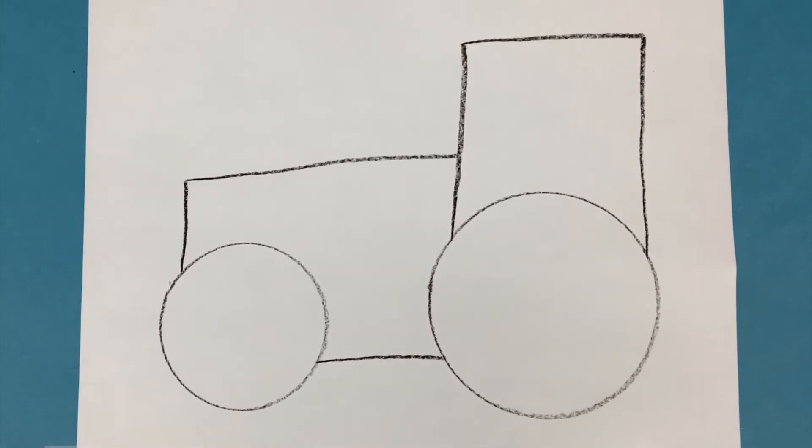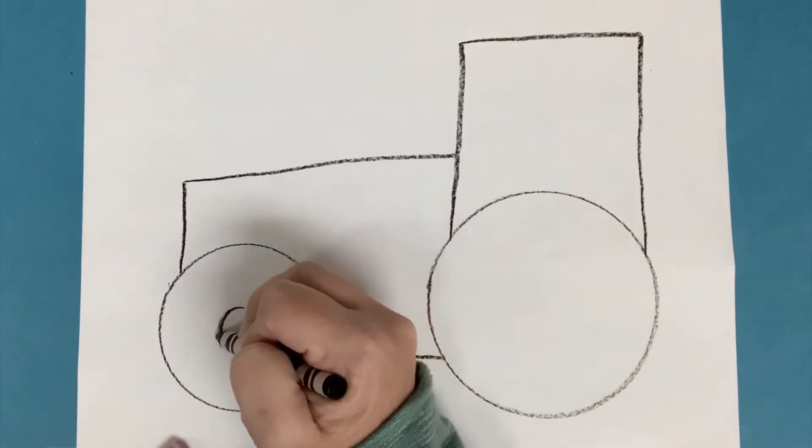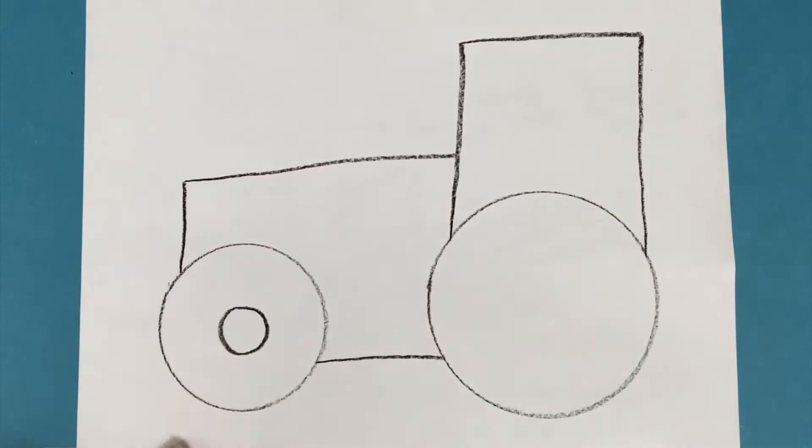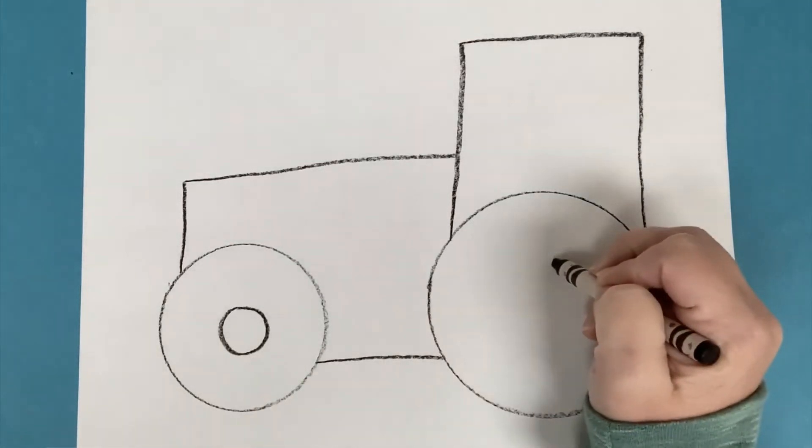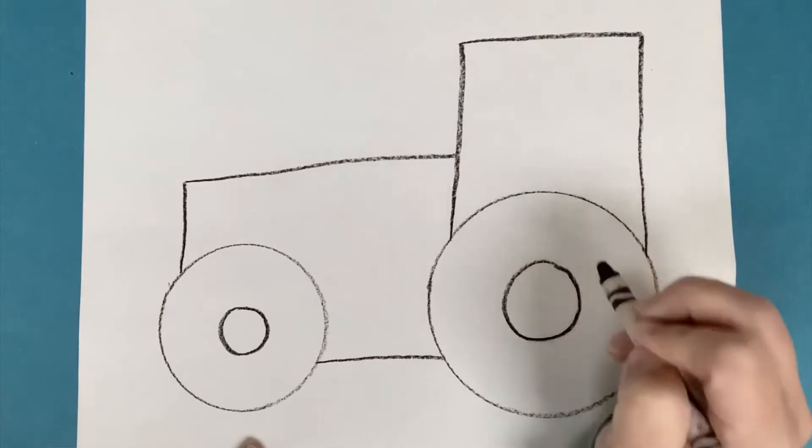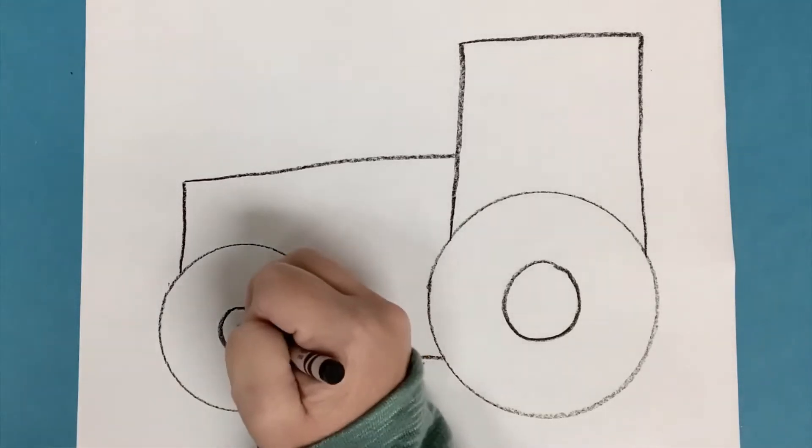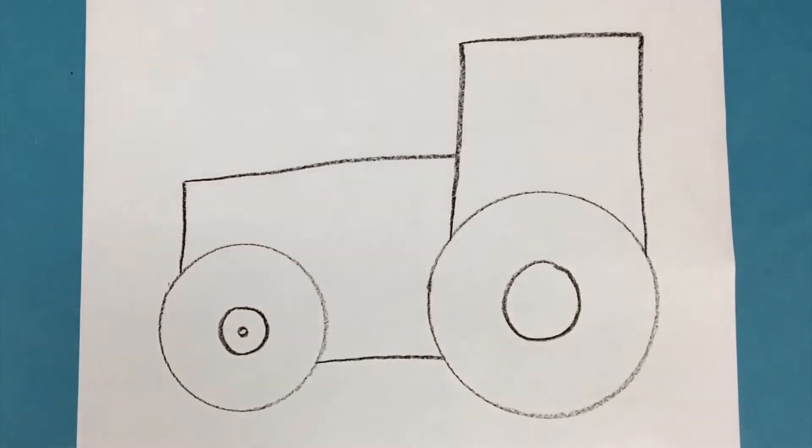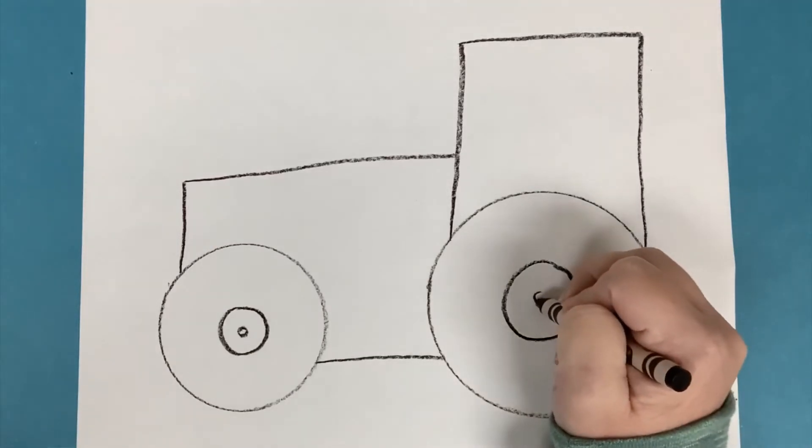So I'm going to add a smaller circle inside the smaller wheel and another smaller circle inside the larger wheel. All right, now I'm going to add another little circle, even smaller inside each of those circles.